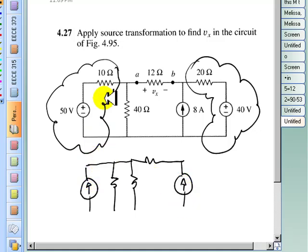What is the value of this resistor? 10 ohms, which is the same value we had before. And this current source, 50 divided by 10. So this is 5 amps. That's good.